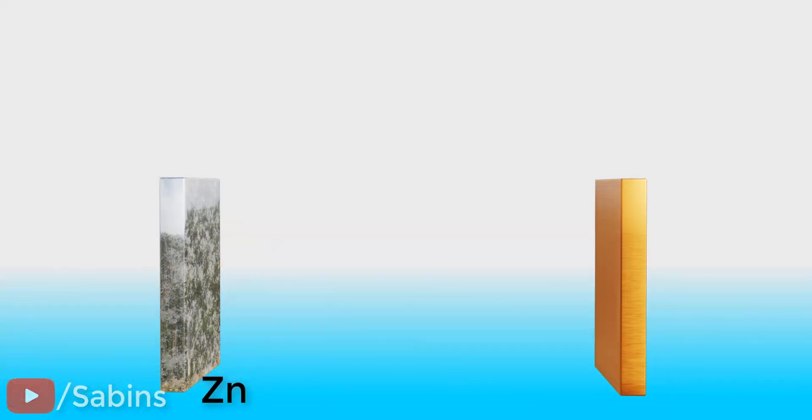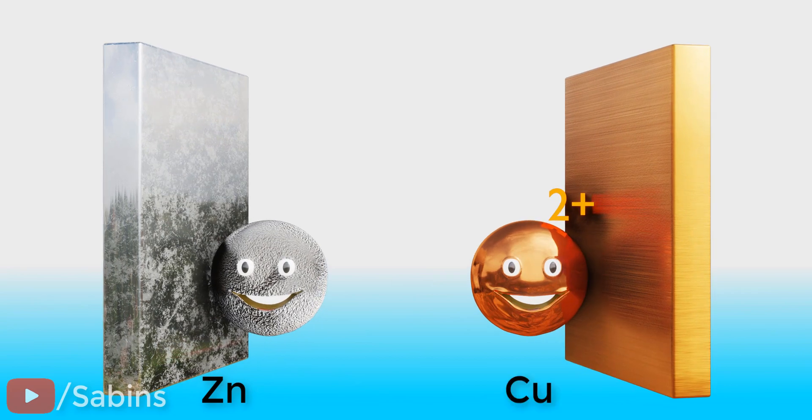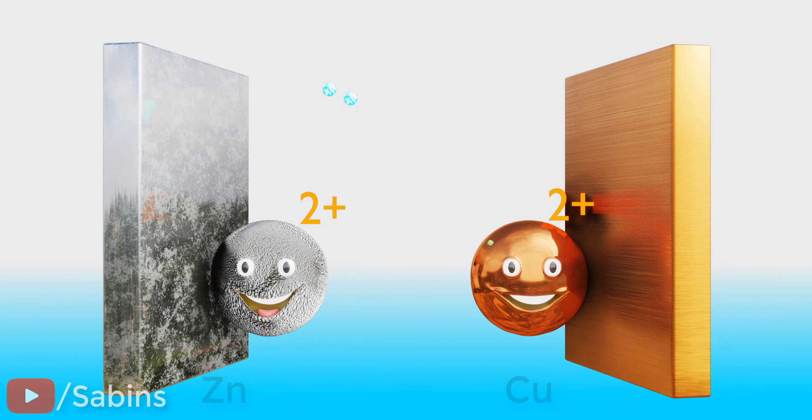It all starts with two materials: zinc atom and copper ion. The zinc atom always wants to lose two electrons. Only when it loses two electrons does the zinc atom become stable.